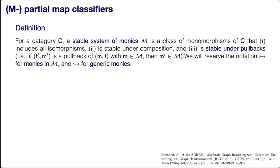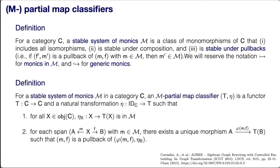One of the most important features of a quasi-topos is that it admits a partial map classifier. A stable system of monics is stable under composition and pullbacks, includes all isomorphisms, and we always use regular monomorphisms for this class.